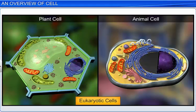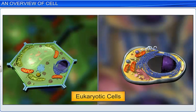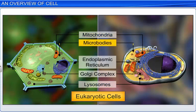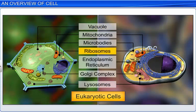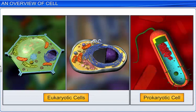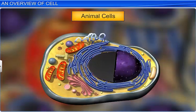Suspended inside the cytoplasm are distinct structures called organelles. In eukaryotic cells, we find membrane bound organelles such as the endoplasmic reticulum, the Golgi complex, lysosomes, mitochondria, microbodies, and vacuoles, as well as non-membrane bound organelles such as ribosomes. Interestingly, ribosomes are also found in chloroplasts of plant cells, as well as the mitochondria and rough endoplasmic reticulum of both plants and animals. Moreover, animal cells possess another non-membrane bound organelle called the centriole, which aids in cell division.